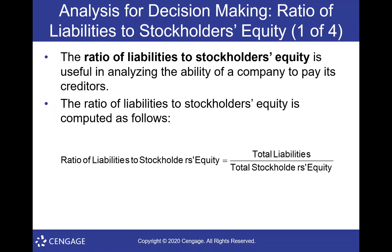Each chapter, we'll learn a couple of these little ratios. The first one is called total liabilities to stockholders' equity. These are what we use when we're trying to make decisions using financial information.